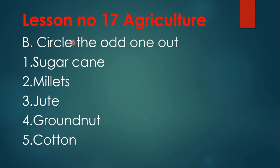Next, Section B: Circle the odd one out. First group — rice, wheat, pulses, sugarcane — sugarcane is the odd one out. Second group — jute, cotton, oil seeds, millets — millets is the odd one.